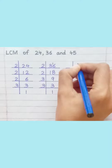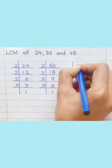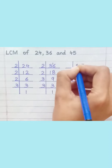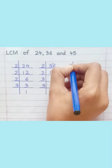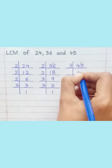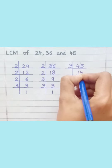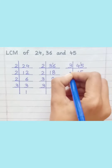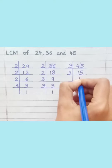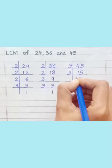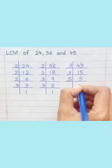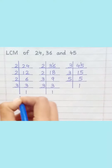45: 3 1s are 3, 3 5s are 15, 3 5s are 15, 5 1s are 5.